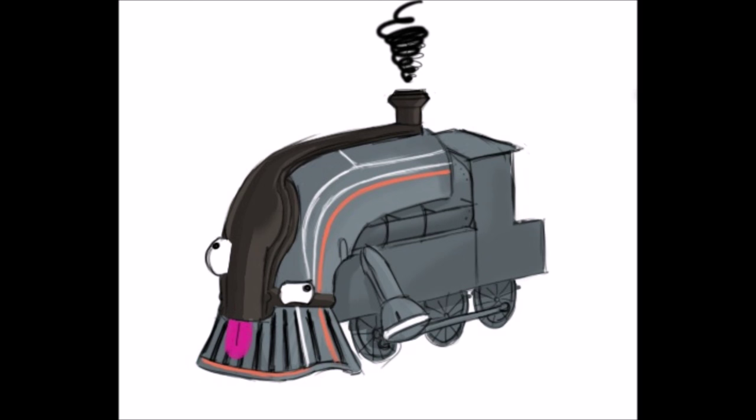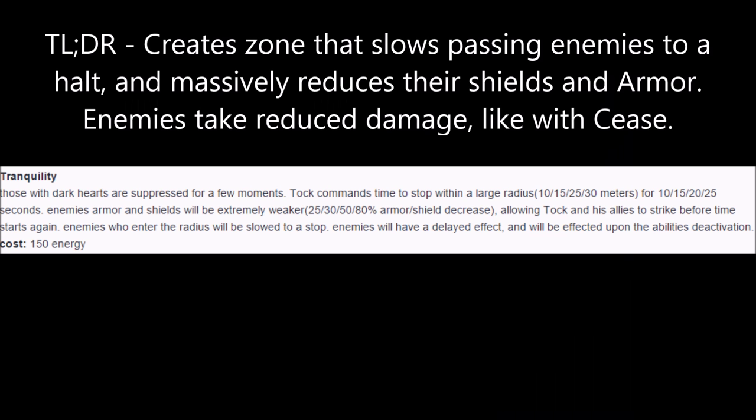TOC's fourth ability is Tranquility. TOC targets an area and creates a bubble where time stops. All allies that enter the bubble will have their armor and shields reduced massively, and they will be slowed to a complete stop. Like with Cease, enemies in the bubble will take no damage until the bubble goes away. When that happens, affected enemies will immediately receive the delayed damage.